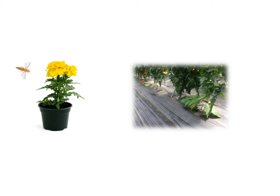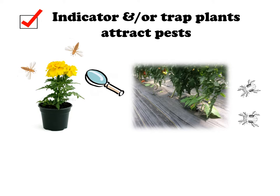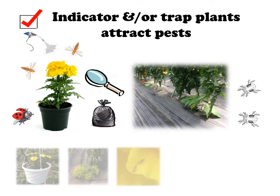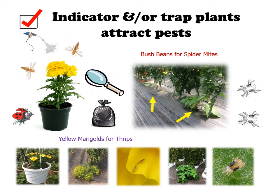Some plants are more attractive to pests than others. These are used as indicator or trap plants to detect pests quickly and early in the growing season. When trapped pest populations increase, they can be treated with a spot insecticide treatment or through releases of beneficial insects. Alternatively, the plant can be bagged and removed from the greenhouse to eliminate the pests. Some examples of indicator and trap plants are yellow marigolds for thrips and bush beans for spider mites.